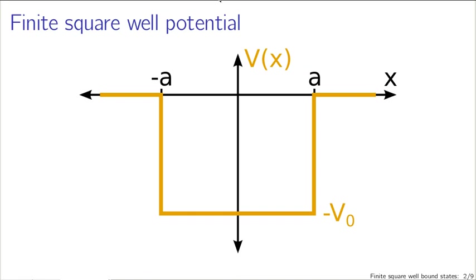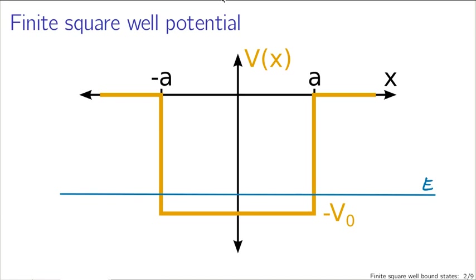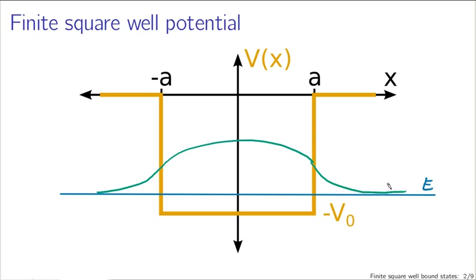We can expect solutions that look like the sorts of things we've seen. Suppose we had some energy level here. For that energy level, we expect the lowest energy wave function to look something like this. In regions where the energy is above the potential, your wave function curves towards the axis. In regions where your energy is below the potential, it curves away from the axis. To have things that are normalizable, we have to have our wave function come down and just barely join the axis — giving states with a curving shape that merges smoothly with the axis.